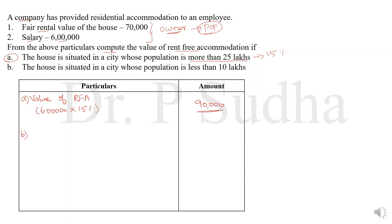For situation B, population is less than 10 lakhs, so we apply 7.5% of salary. Salary is 6 lakhs. On 6 lakhs, we calculate 7.5%, which gives us 45,000. This is the value of rent-free accommodation for situation B.